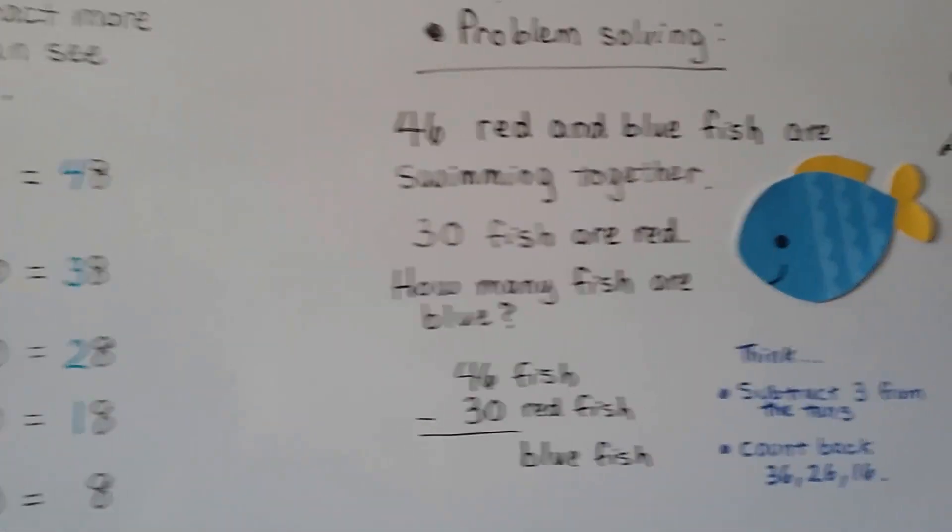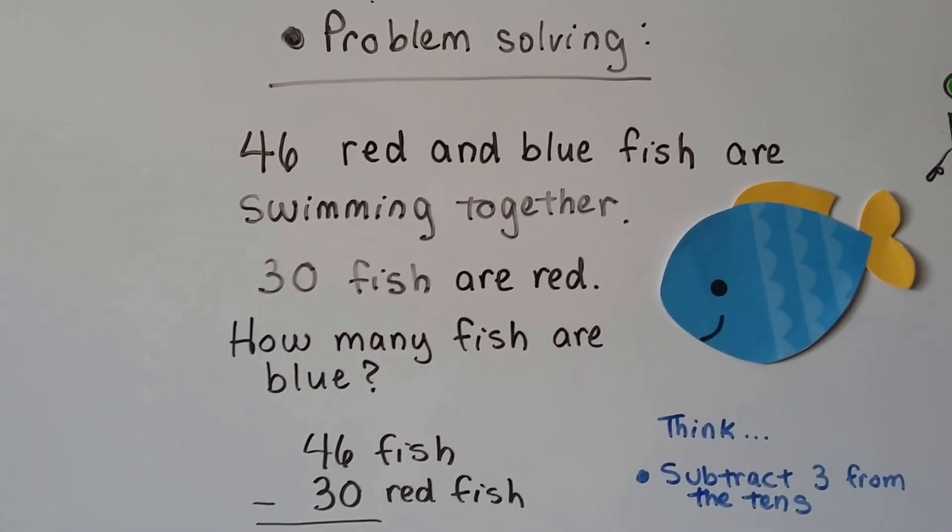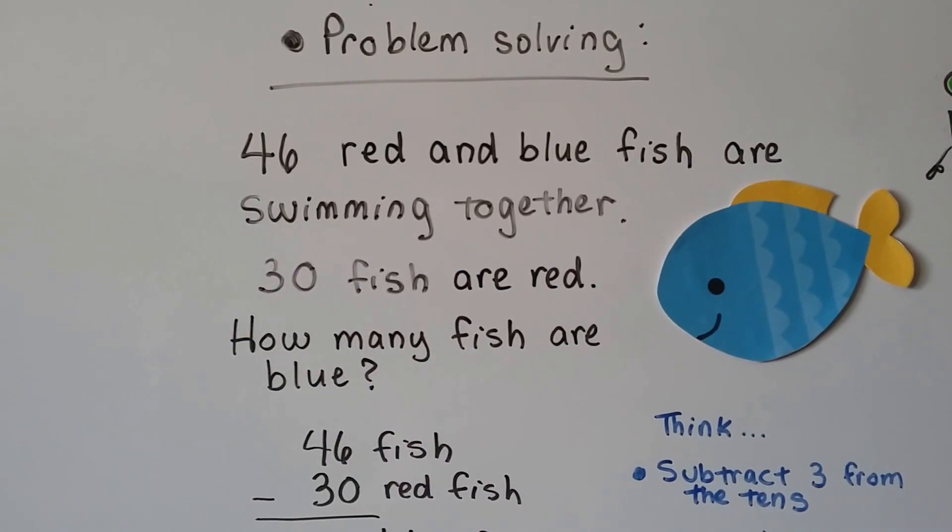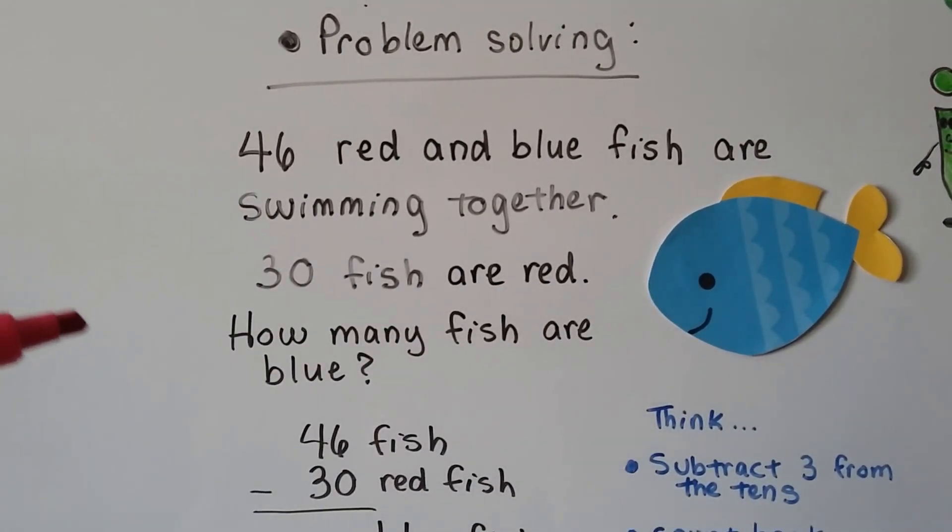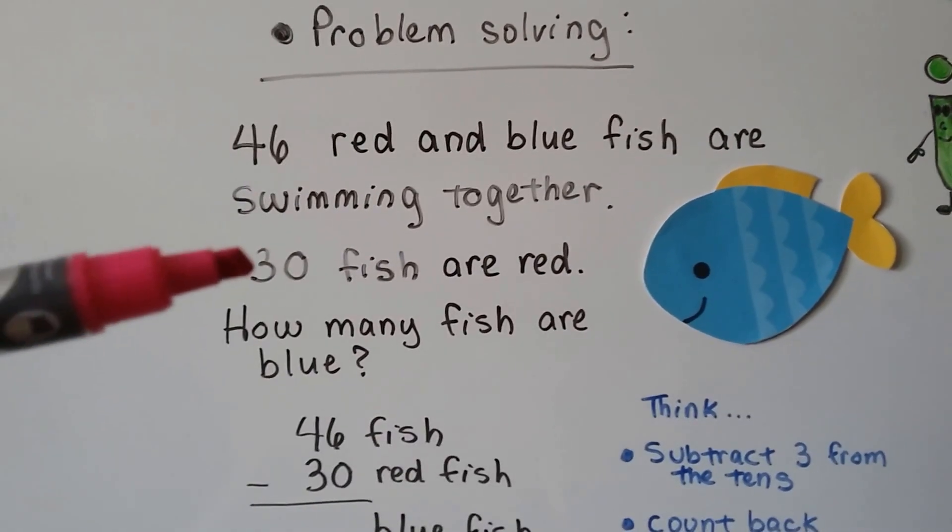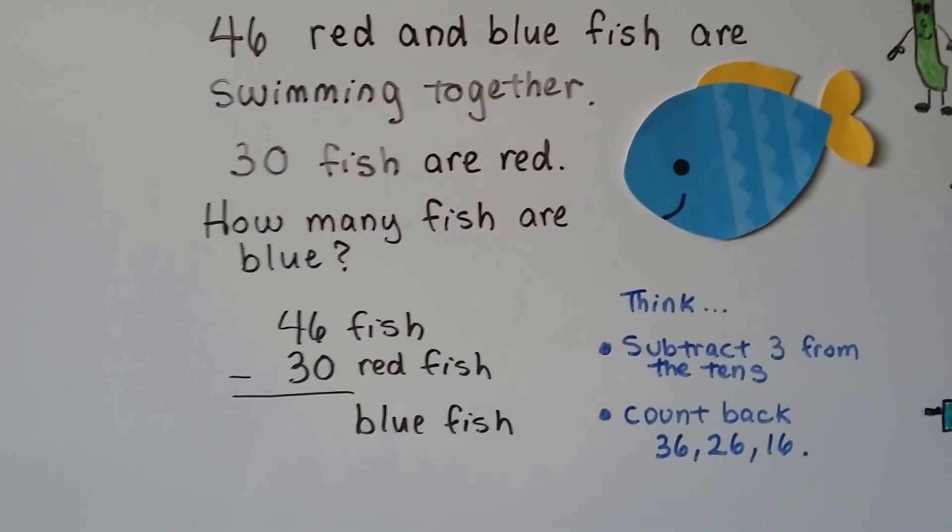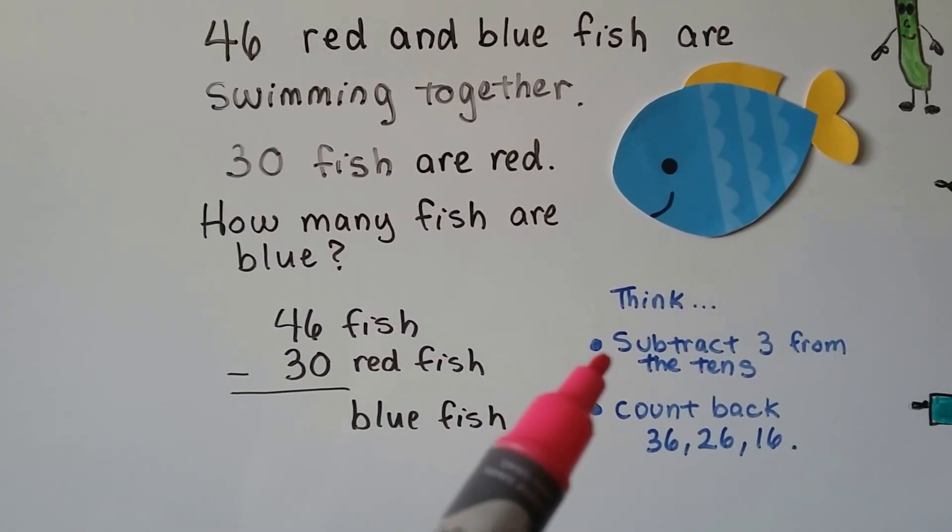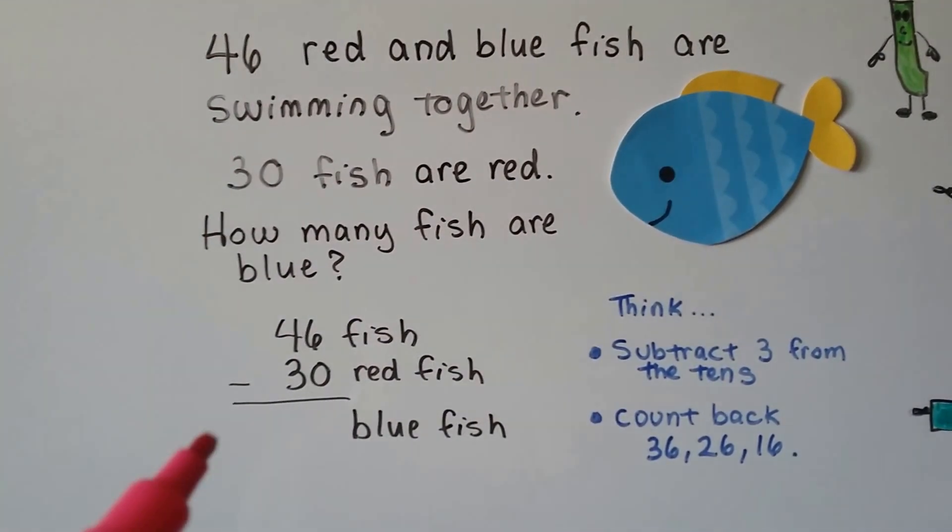Let's try some problem solving. There's 46 red and blue fish that are swimming together. 30 fish are red. How many fish are blue? So there's 46 red and blue fish, and 30 of them are red. How many are blue? So we think we could subtract 3 from the tens place, because there's 3 tens here, right? We could subtract 3 from that 10, from the 4.